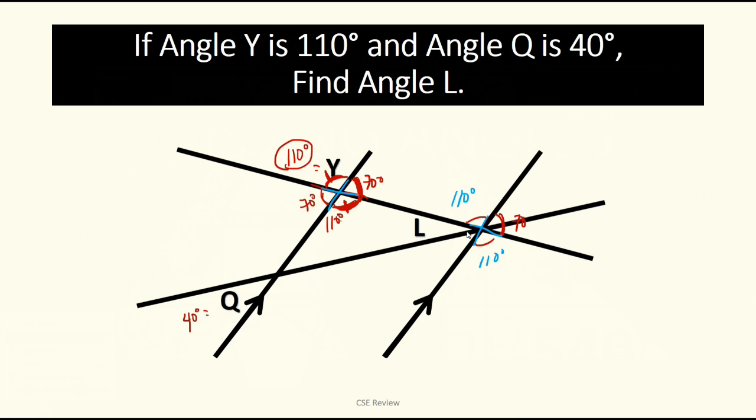But again, hindi masyadong helpful sa atin yung information na yan kasi nga, hindi natin alam kung ano itong angle L. And yun yung hinahanap natin. So, saan mo makukuha yung clue? It will be on the other side. Itong Q. That will be your other clue. Ang sabi yung angle Q daw is 40 degrees. Ngayon, ano ibig sabihin nun? If this right here ay dalawang intersecting lines, again, the same concept here. Kung ano yung katapat niya, tapat kapareho niya. So, 40 degrees yun, this will also be 40 degrees.